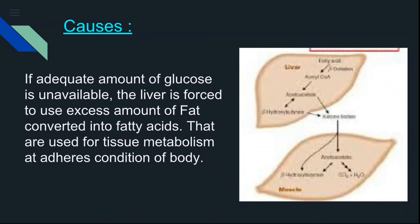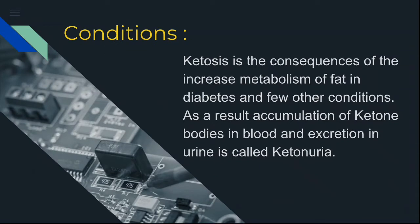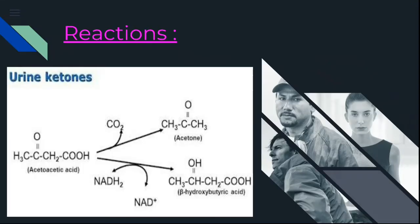Ketosis is the consequence of increased fat metabolism in diabetes and a few other conditions like hunger. As a result, accumulation of ketone bodies such as acetone and acetoacetic acid in the blood and their excretion in urine is called ketonuria.